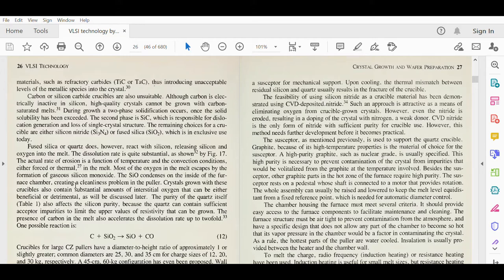The feasibility of using silicon nitride as a crucible material has been demonstrated using CVD deposited nitride. CVD is chemical vapor deposition; we will study this later in the syllabus. Such an approach is attractive as a means of eliminating oxygen from crucible grown crystals. However, even the nitride is eroded, resulting in doping of the crystal with nitrogen, a weak donor. CVD nitride is the only form with sufficient purity for crucible use, but this method needs further development before it becomes practical.